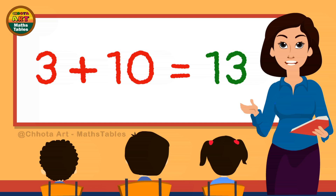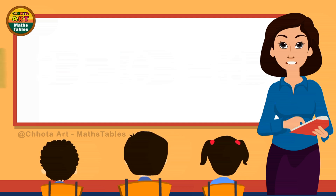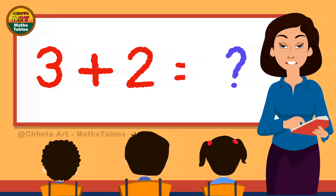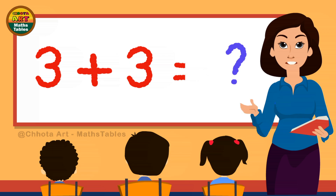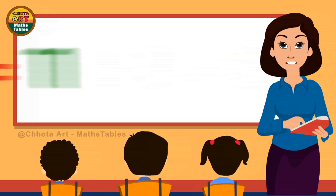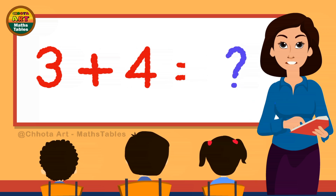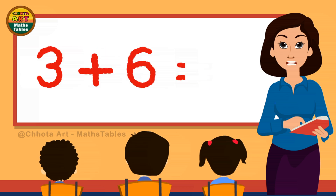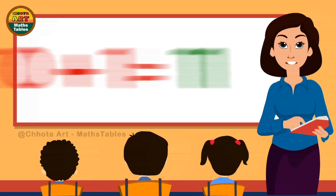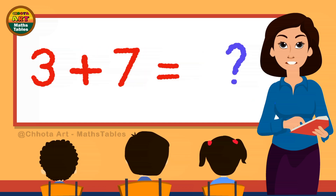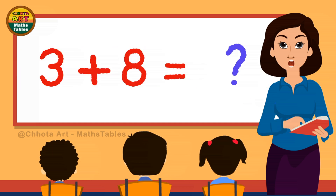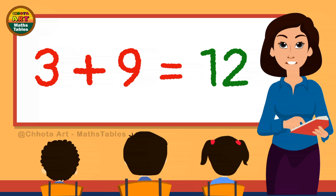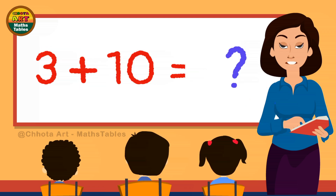3 plus 10 is 13. 3 plus 1 is 4. 3 plus 2 is 5. 3 plus 3 is 6. 3 plus 4 is 7. 3 plus 5 is 8. 3 plus 6 is 9. 3 plus 7 is 10. 3 plus 8 is 11. 3 plus 9 is 12. 3 plus 10 is 13.